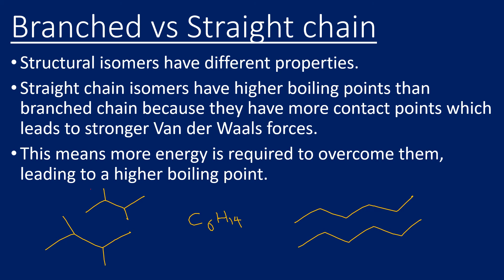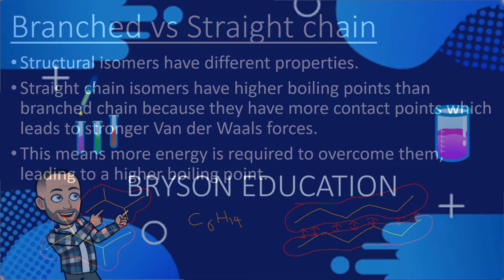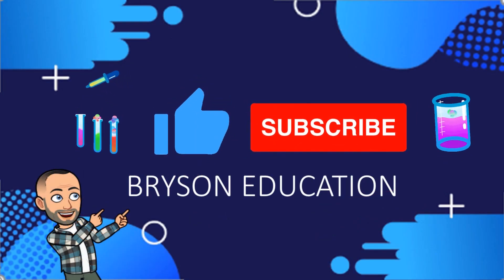However, the branched molecule on the left actually has fewer contact points. Although it has the same number of electrons, it has less surface contact, which leads to weaker van der Waals forces of attraction. Comparing straight chain versus branched chain with the same molecular formula, the straight chain has more contact points and stronger van der Waals forces, requiring more energy to overcome them. Therefore, straight chain isomers have higher boiling points than branched chain isomers. That's the end of this video — hopefully that was useful, thanks for watching.